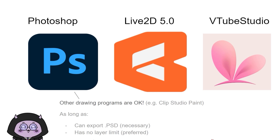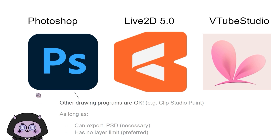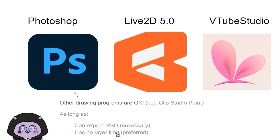Throughout our class, we'll be using three programs: Photoshop for illustration, Live2D for rigging, and VTuber Studio for face tracking. Other drawing programs are okay to use, such as Clip Studio Paint, as long as it can export in a PSD format and preferably doesn't have a layer limit.